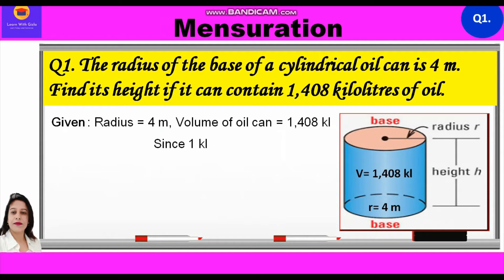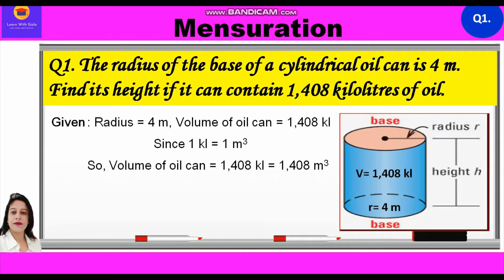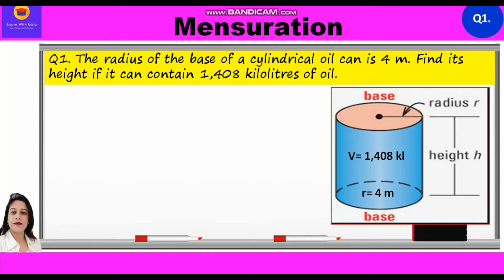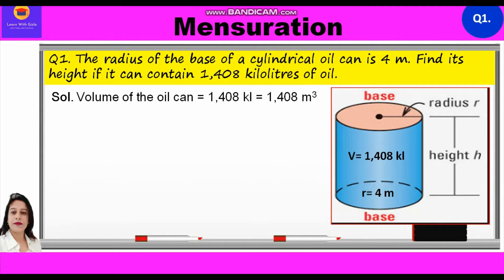Since 1 kilolitre is equal to 1 meter cube, therefore we can say volume of oil can is equal to 1408 kilolitres which is equal to 1408 meter cube, and we have to find the height of the oil can. So, let us start with the solution. Volume of the oil can is given to us as 1408 kilolitres which is equal to 1408 meter cube.